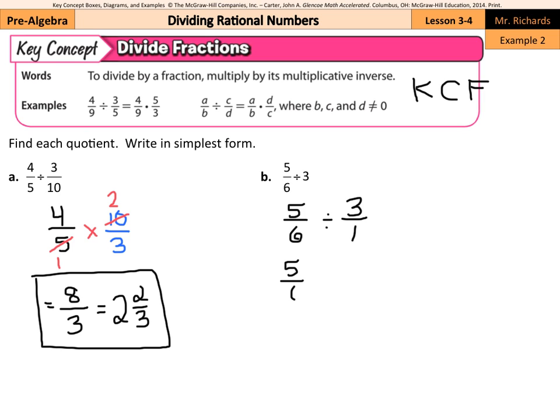So 5/6 times 1/3. Now there's nothing we can cross simplify here. The 5 and the 3 do not cross simplify. The 1 and the 6 do not cross simplify. Sometimes a common mistake that we make is we'll cross simplify with the division. Hey, look, I can divide. No, don't. You can only cross simplify once you're down to multiplication.